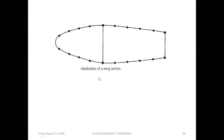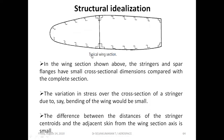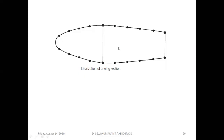So this is the idealized section and this is the actual section. We will see some problems with particular booms in the numerical examples.